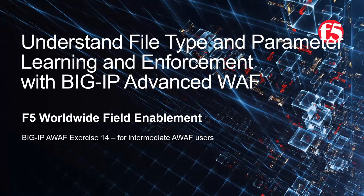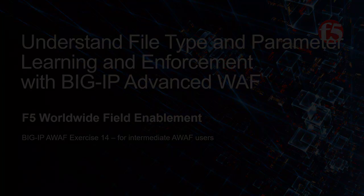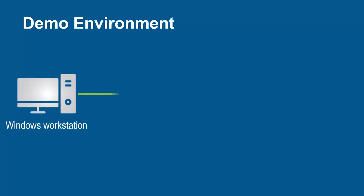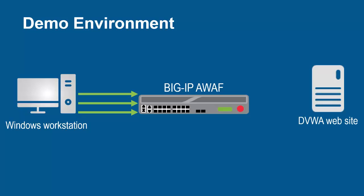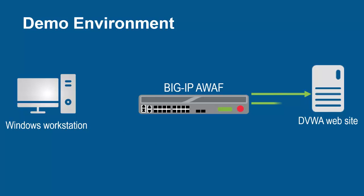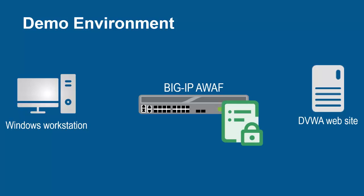For optimal viewing, we recommend using full screen mode. The environment for this demo contains three devices. A Windows workstation will be used for sending requests to build the security policy. These requests will arrive at the F5 BIG-IP system running Advanced WAF. The BIG-IP system sits in front of the backend web application, and using its full proxy architecture, examines every request before sending them to the backend web server. Through this process, BIG-IP Advanced WAF can begin creating a web application security policy.